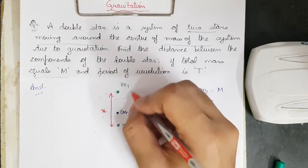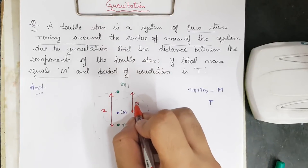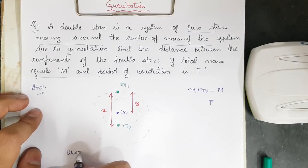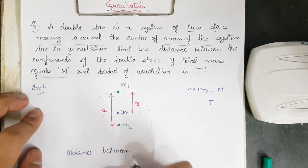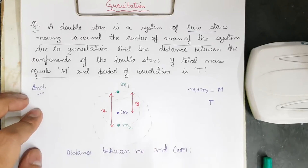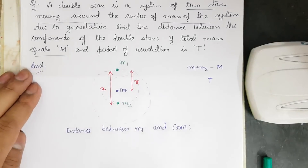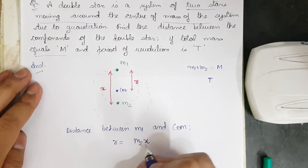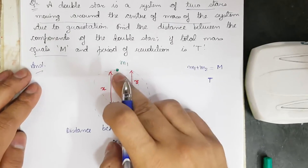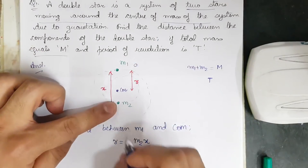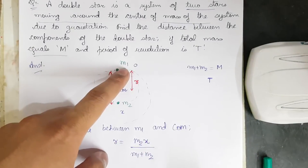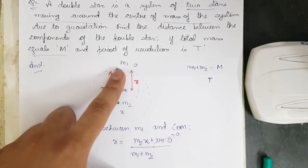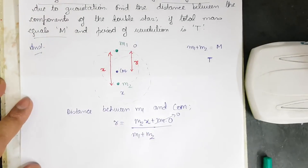The distance between m1 and the center of mass we call r. From the basic center of mass chapter, r equals m2 times x upon m1 plus m2. Taking m1's position as coordinate zero and m2's position as x, the m1 term drops out, giving us r equals m2·x / (m1 + m2).